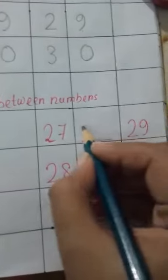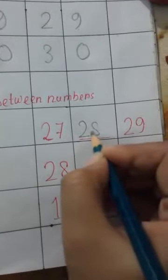2, 7, 27, 29, 29. What comes between? 2, 8, 28.